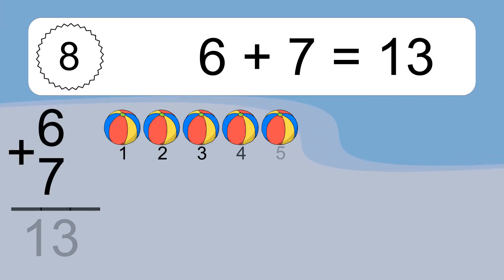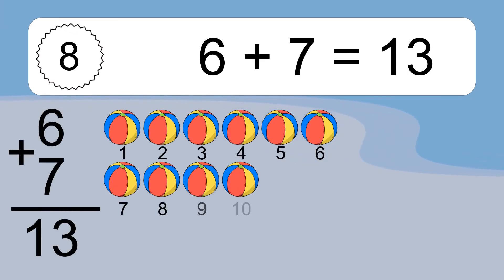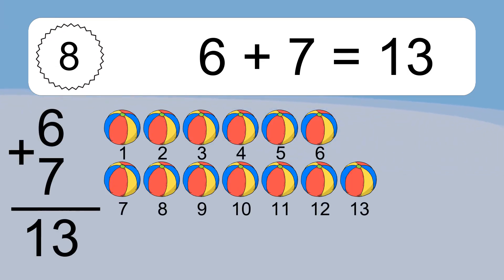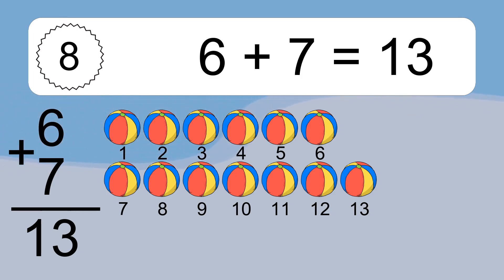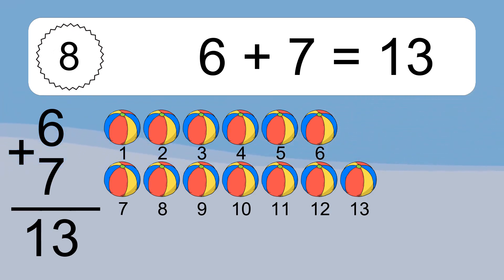6 plus 7 equals what? 6 plus 7 equals 13. Let's count it: 1, 2, 3, 4, 5, 6, 7, 8, 9, 10, 11, 12, 13.